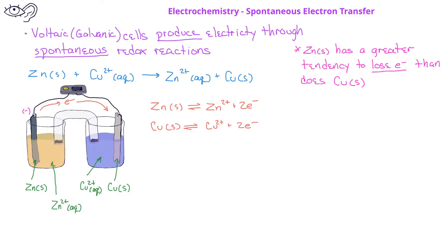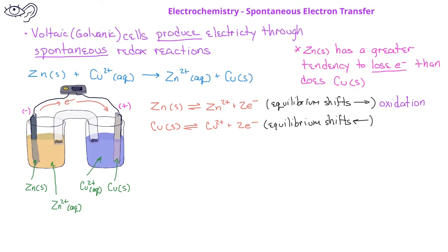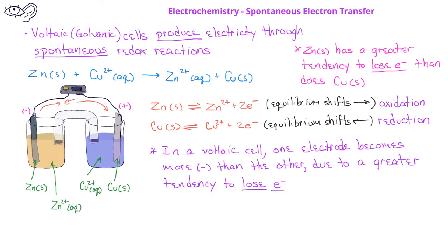If the two half cells are connected by a wire running from the zinc through a light bulb or some other electrical device to the copper strip, then the electrons will spontaneously flow from the zinc electrode, which is more negatively charged, to the copper electrode, which is more positively charged. As the electrons flow away from the zinc electrode, the zinc-zinc ion equilibrium shifts to the right based on Le Chatelier's principle, and so oxidation occurs. As electrons flow to the copper electrode, the copper metal-copper ion equilibrium shifts to the left, and reduction occurs. Flowing electrons constitute an electrical current that lights a light bulb. The idea that one electrode in a voltaic cell becomes more negatively charged relative to the other electrode due to differences in ionization tendencies is a key point in understanding how voltaic cells work.